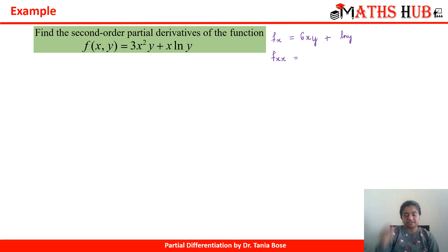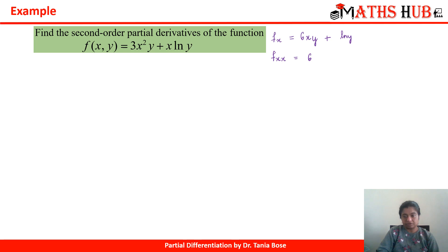f of xx means taking the derivative of fx with respect to x again, keeping y constant. From fx = 6xy + log y, the derivative of 6xy with respect to x gives 6y (y is kept constant), and log y is already constant so its derivative is 0. Thus fₓₓ = 6y. Similarly, for f of xy we take the derivative of fx with respect to y, keeping x constant. The derivative of 6xy with respect to y gives 6x, and the derivative of log y is 1/y. So fₓᵧ = 6x + 1/y.